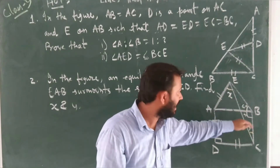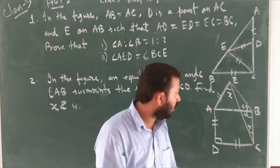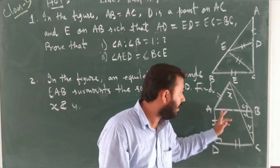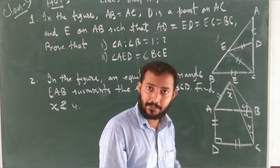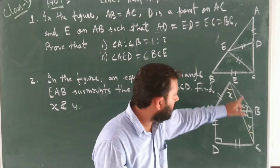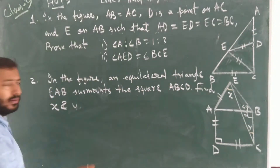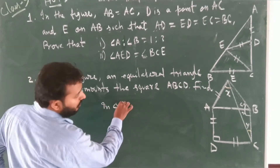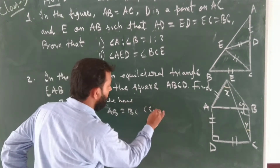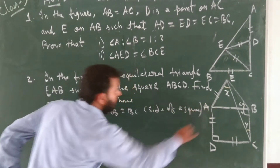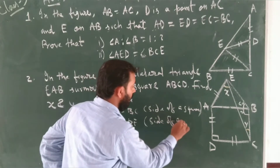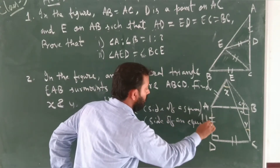That means AB equals BC and AB equals BE. So we can say that BE equals BC. We write in the presentation: AB equals BC as a side of the square, and AB equals BE as a side of the equilateral triangle.